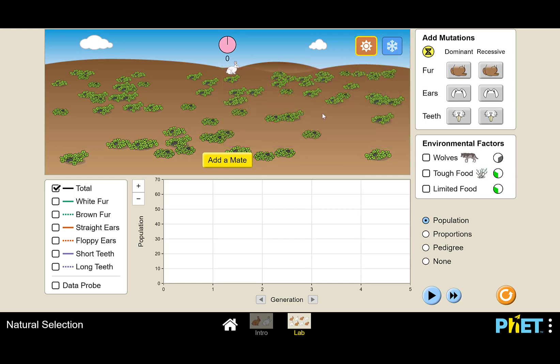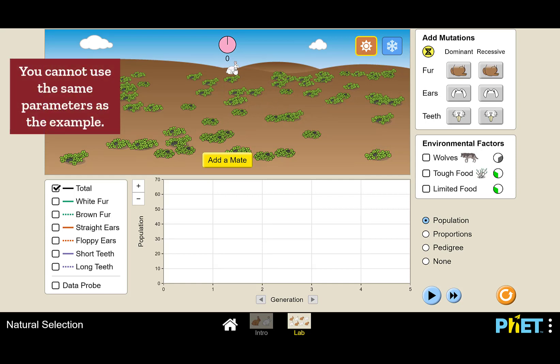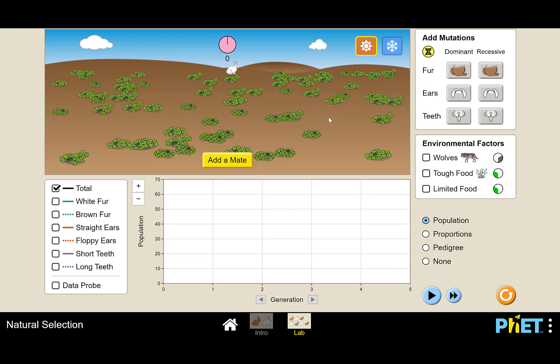I am going to determine if brown fur is an adaptation. So my hypothesis would be that brown fur in the equator is an adaptation if wolves are introduced. You will need to pick a different hypothesis, but we will do this run through together.